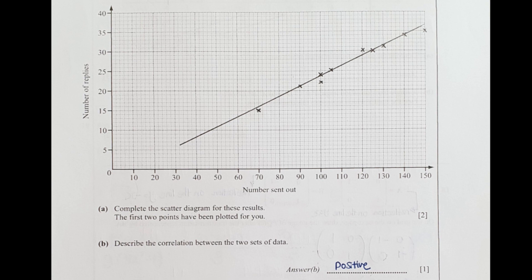Question 16, I plot down all the coordinates first. To draw the line of best fit, all you need to do is join up as many points as possible, and those that you didn't join must stay closely next to the line you have drawn. To describe the correlation, this is a positive correlation because as the numbers sent out increase, the numbers of reply increases as well.